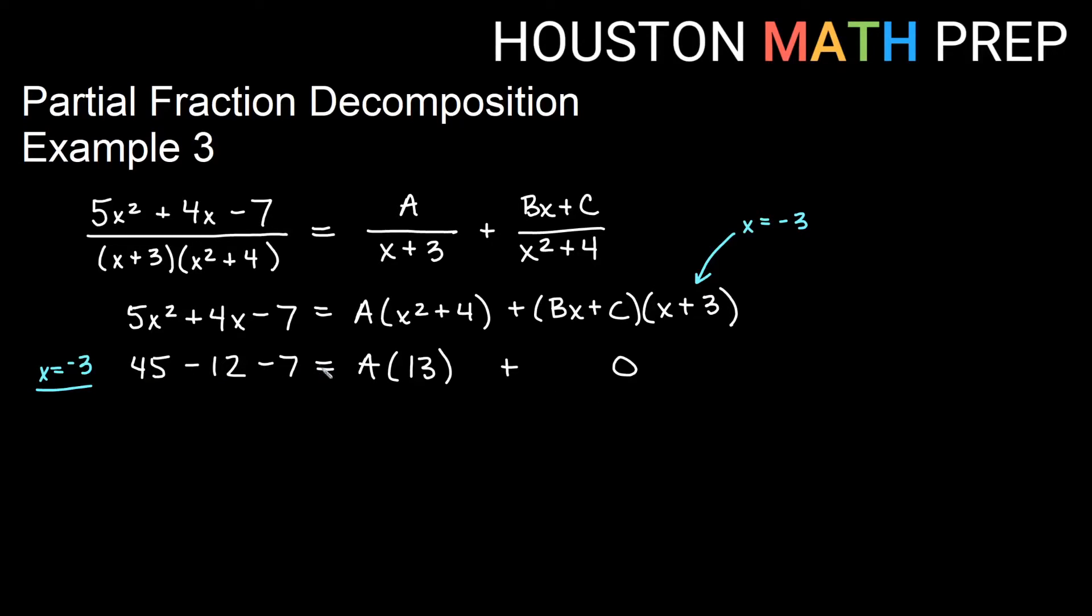Okay, 45 minus 12 minus 7 is going to give us 26 and that 26 is equal to 13A. And if I divide both sides by 13 I would get that A is equal to 2.